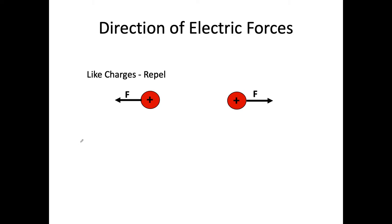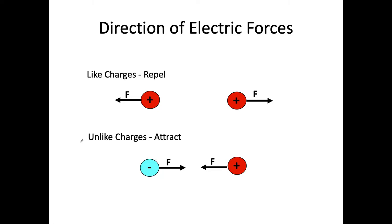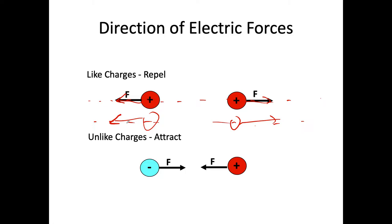Now, after discussing positive and negative charge, let's talk about how they interact. If you have two positive charges, they're going to repel each other. The force is in the direction along the line joining the two charges, pointing away from each other. The same is true for two negative charges — they repel as well. If you have a positive charge and a negative charge, they attract each other, so the force points toward each other.